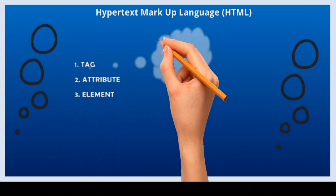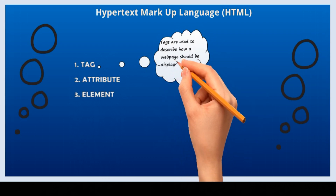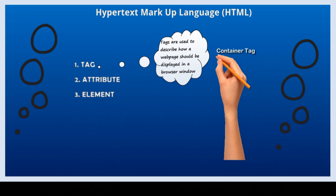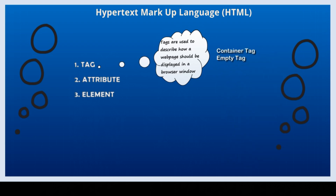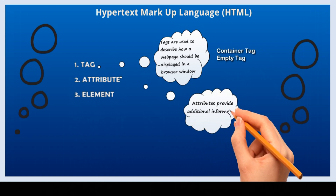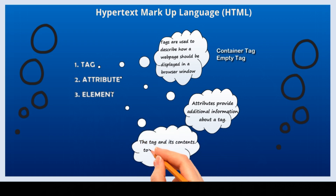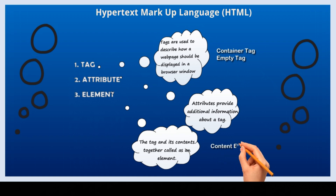Today we learned about Hypertext Markup Language or HTML. It has three components: tag, attribute, and element. Tags are used to describe how a web page should be displayed in a browser window. Types of tag: container tag and empty tag. Attributes provide additional information about a tag. The final component is element — the tag and its contents together are called as an element. Types of element: content element, empty element, and nested element. These are the components of HTML.